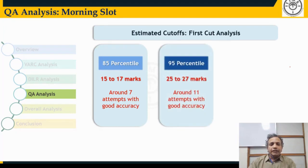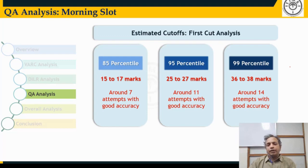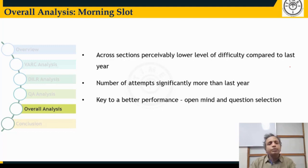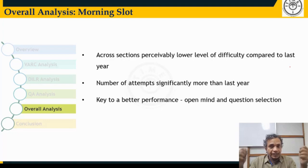Overall across all sections, we perceive a clear drop in difficulty level compared to last year — clearly in Quant and DILR, and slightly in English as well. Significantly more attempts are possible this year. Those who kept an open mind, didn't anchor to last year's paper, and focused on answering the easiest questions without missing any easy ones are likely to have performed best. Good luck to everyone targeting CAT 24 or CAT 25.